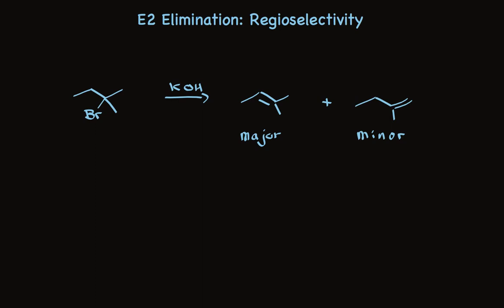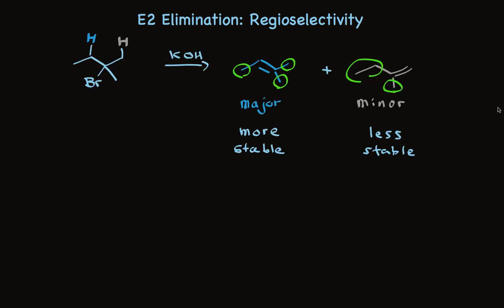Which product is formed depends on which hydrogen is abstracted. When the hydrogen that I've highlighted in blue is abstracted, we form the product on the left. Notice that there are three alkyl groups attached to the double bond.